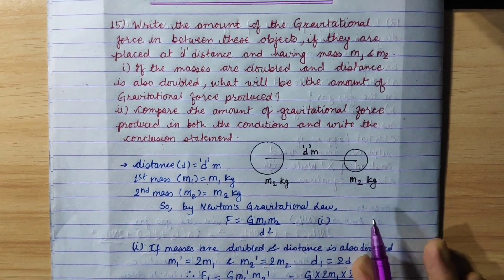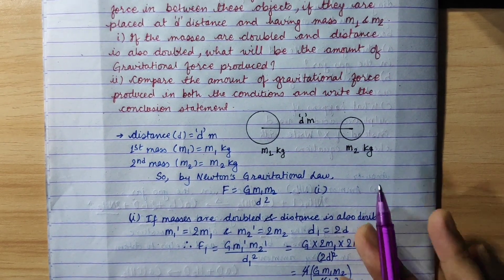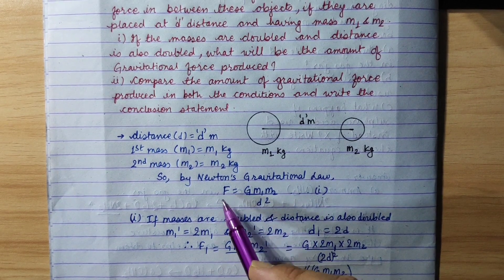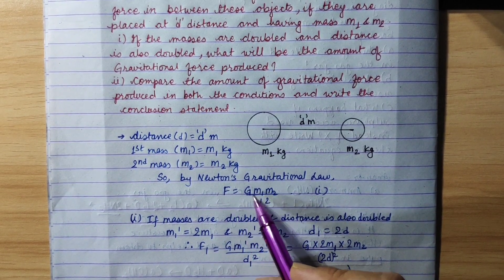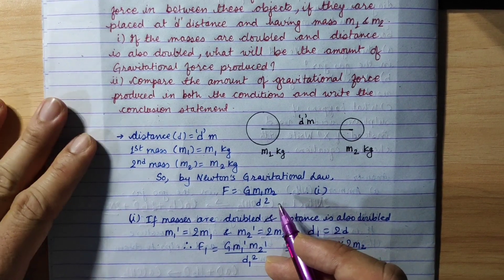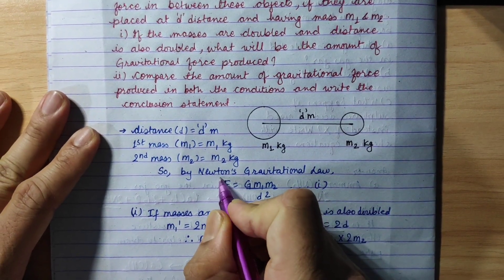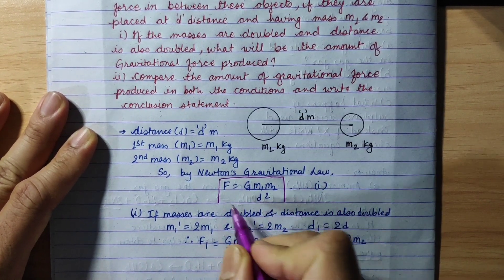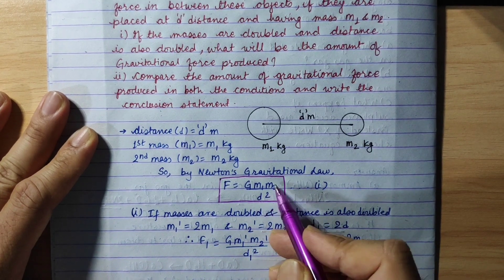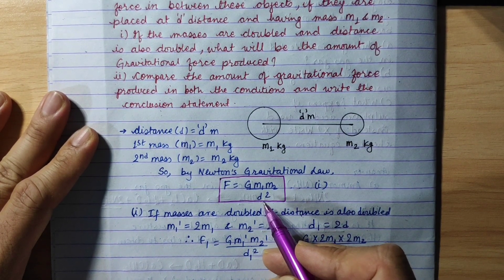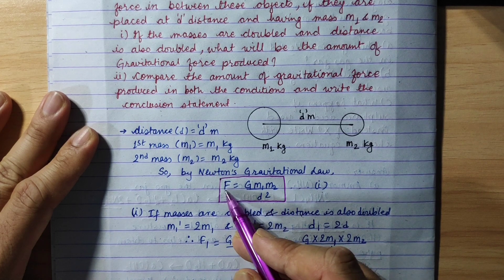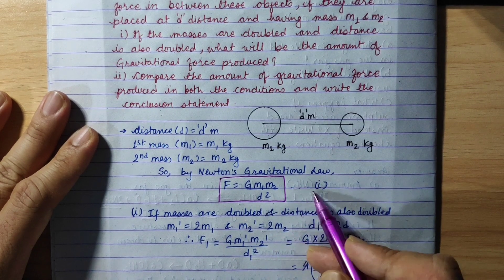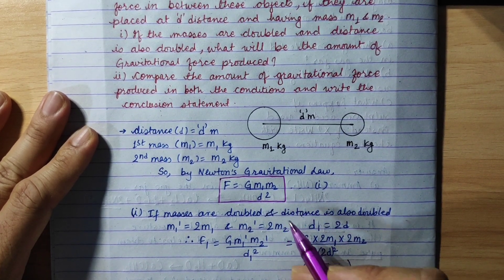Newton's law of gravitation gives us: Force equals G·m1·m2 / d². This is the formula. The mass is given by m1 and m2, and the amount of gravitational force is given by this equation.